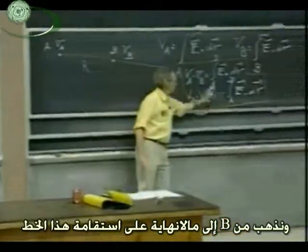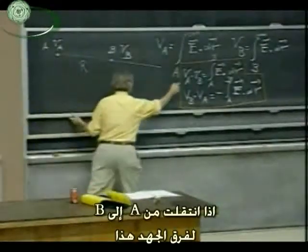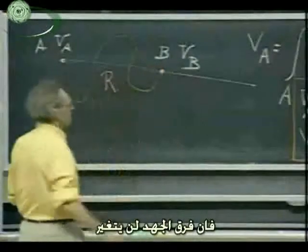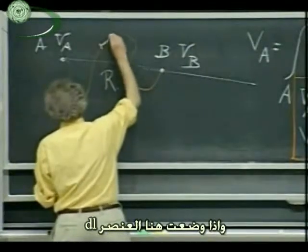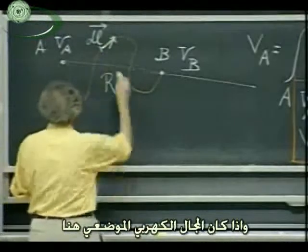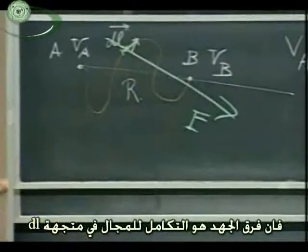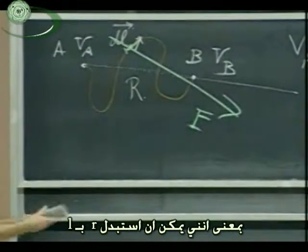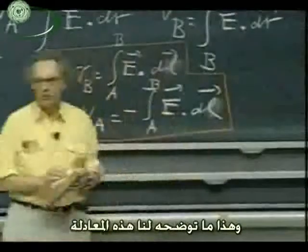The potential difference VA minus VB is path independent — it makes no difference how you go from A to B. If I introduce an element dL, a small vector, and the local E vector is at this point, then VA minus VB is the integral of E dot dL. I can replace R by L, and you may choose any path that you prefer.